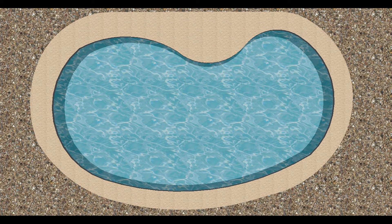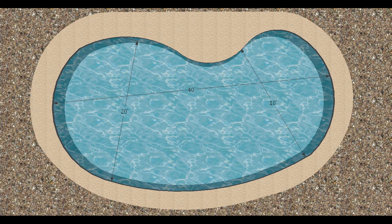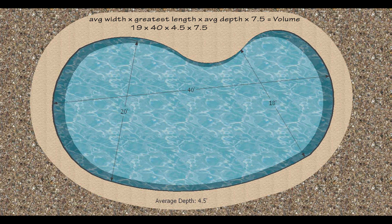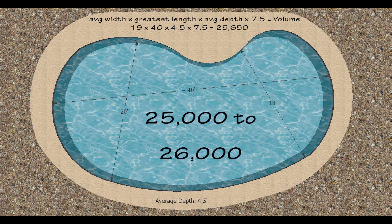Now let's take a look at the classic kidney-shaped pool. Here, we'll take the average width, the greatest length, and the average depth and multiply those by 7.5. So if we have a kidney-shaped pool that's 40 feet long and the widths are 20 feet and 18 feet at the two ends, with an average depth of 4.5 feet, then we'll take 19 — which is the average width — by 40 (the length), by 4.5 (the depth), and by 7.5 (the number of gallons in a cubic foot), and we get 25,650. Now, this is going to overestimate the volume of the pool because of the rounded corners, so this pool is likely going to be somewhere between 25,000 and 26,000 gallons, but it'll put you in the ballpark.